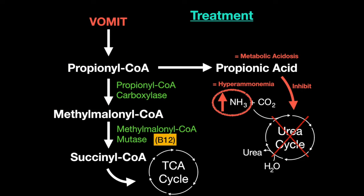The treatment for these acidemias is limiting the amount of substances that are metabolized to propionyl-CoA in the diet. Now let's go over glycogen regulation.